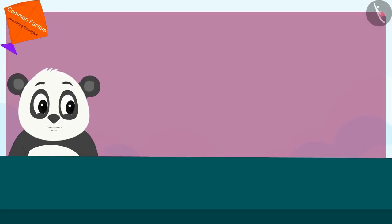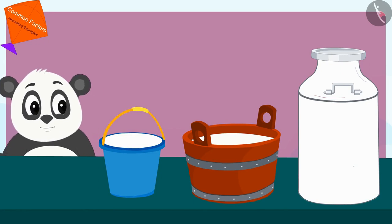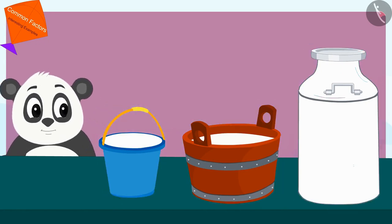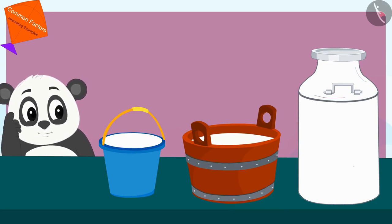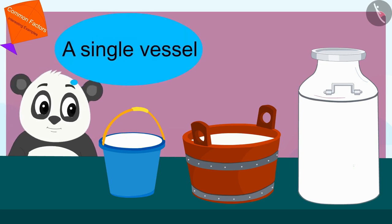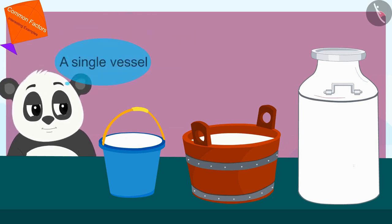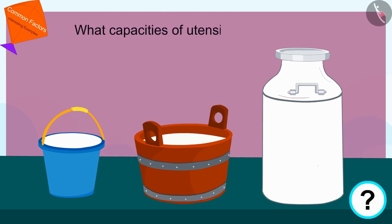Golu has 12, 18 and 24 liters of milk filled in different pots. But Golu doesn't remember which utensil has how many liters of milk. Golu is thinking that he will measure the milk of all those utensils using a single vessel. Children, can you tell us what capacities of utensils can Golu use?